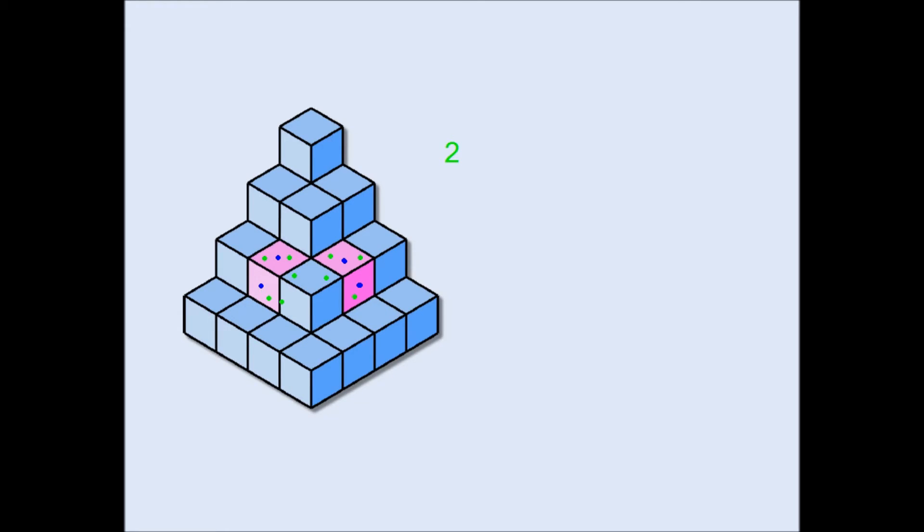So like before, I'm losing two of the squares from the surface area, at the same time gaining four. So I will have a net gain of two faces or two squares.